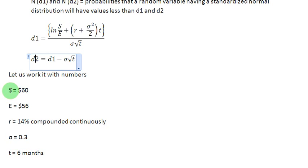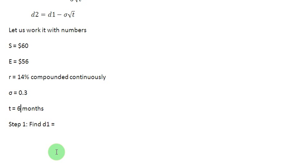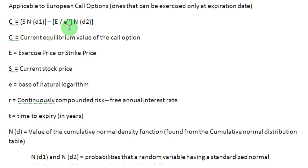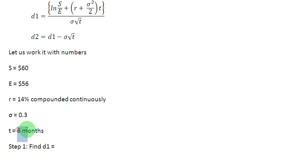Let us take some numbers and use them in these formulas to find out the value of a call option and then later the value of a put option. The current stock price is $60 and we have a call option on this stock for which the exercise price is $56. The continuously compounded risk-free rate of interest is 14%, the standard deviation of this stock price is 0.3, and this option is expiring in six months. Time in this formula is always to be stated in years, so six months converts to 0.5 years.